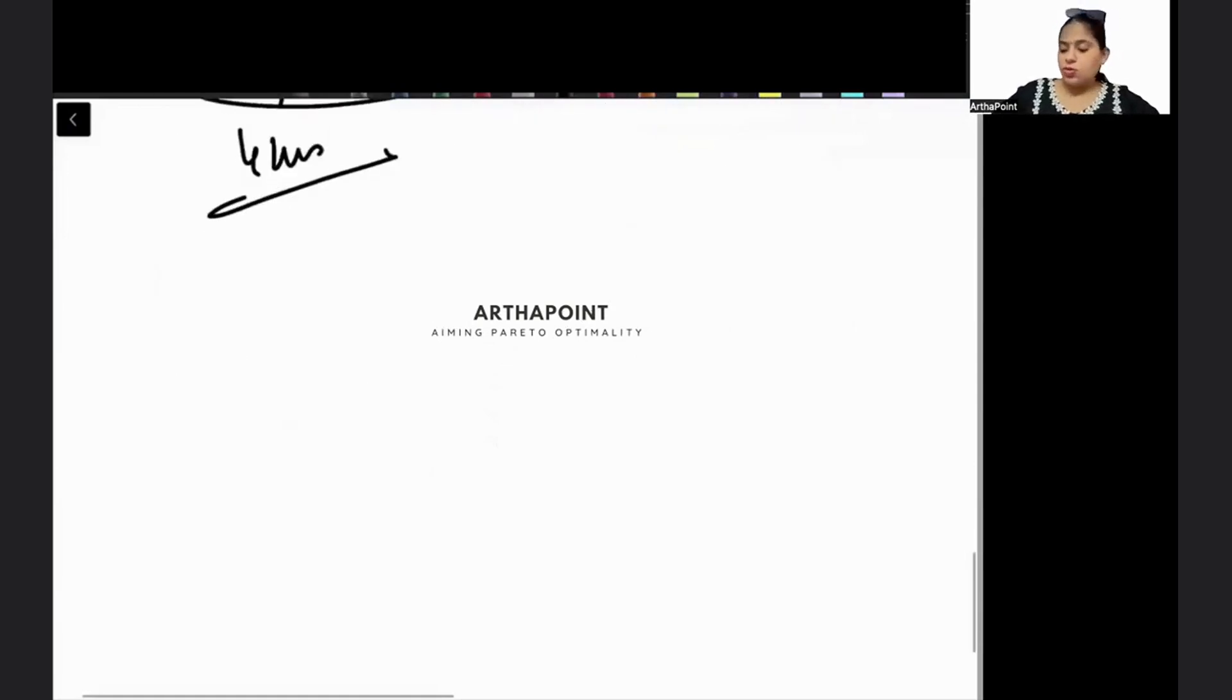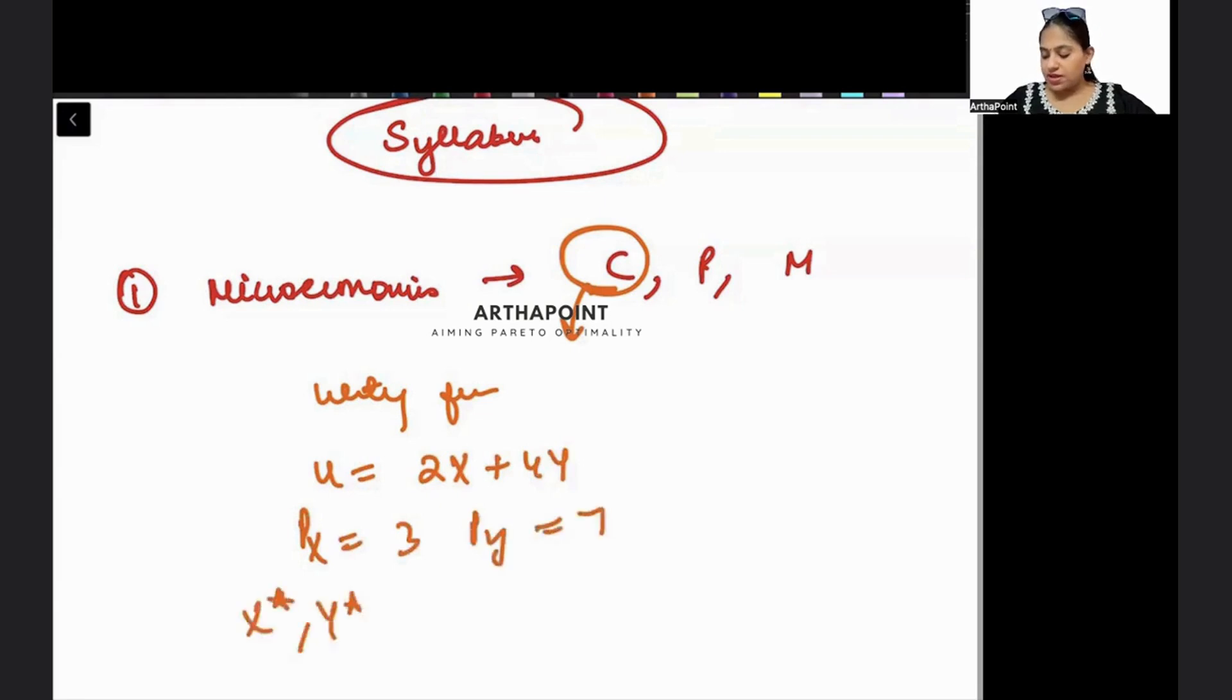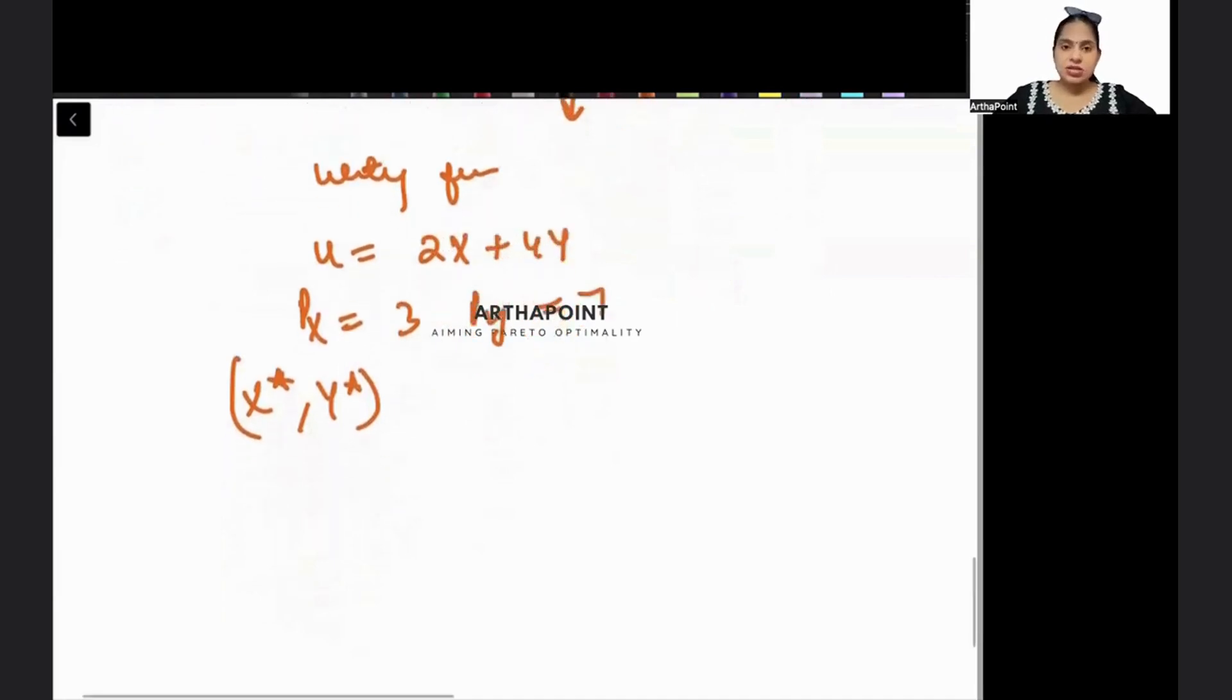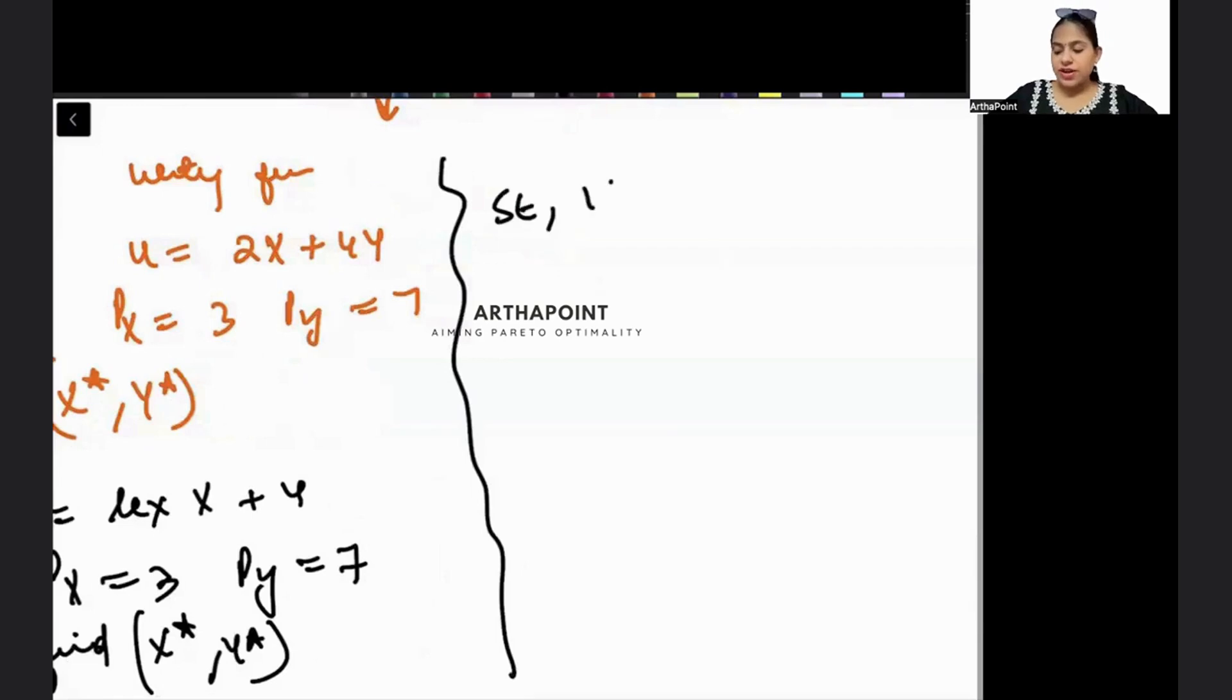Let me share the syllabus of Phase 1 - what all we have to study. First of all, you will start with microeconomics. In micro you will do consumer theory, producer theory, market structure. In consumer theory, everything will be asked - utility functions. For example, if I tell you U equals 2X plus 4Y, Px equals 3, Py equals 7, find the optimal bundle X star, Y star. They can ask you about U equals lex X plus Y, and Px equals 3 and Py equals 7, find X star, Y star. Then you will be asked questions on substitution effect, income effect. These kind of questions can be asked in exam.